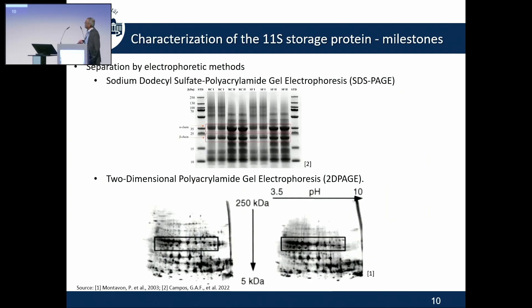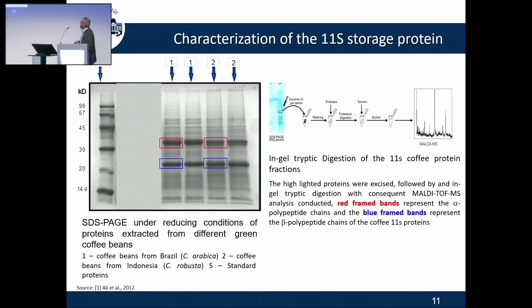The first methods to identify these proteins was electrophoresis, used by Montaudon and by Nestlé, showing that proteins can be separated and are already modified during ripening and maturation of the coffee beans — so already on the trees themselves they are modified. We concentrated on SDS-PAGE, where we separated the proteins, cut them out, digested them, and tried to allocate the modifications — red-framed are the alpha chains, and these are beta chains — to identify where modifications occur.